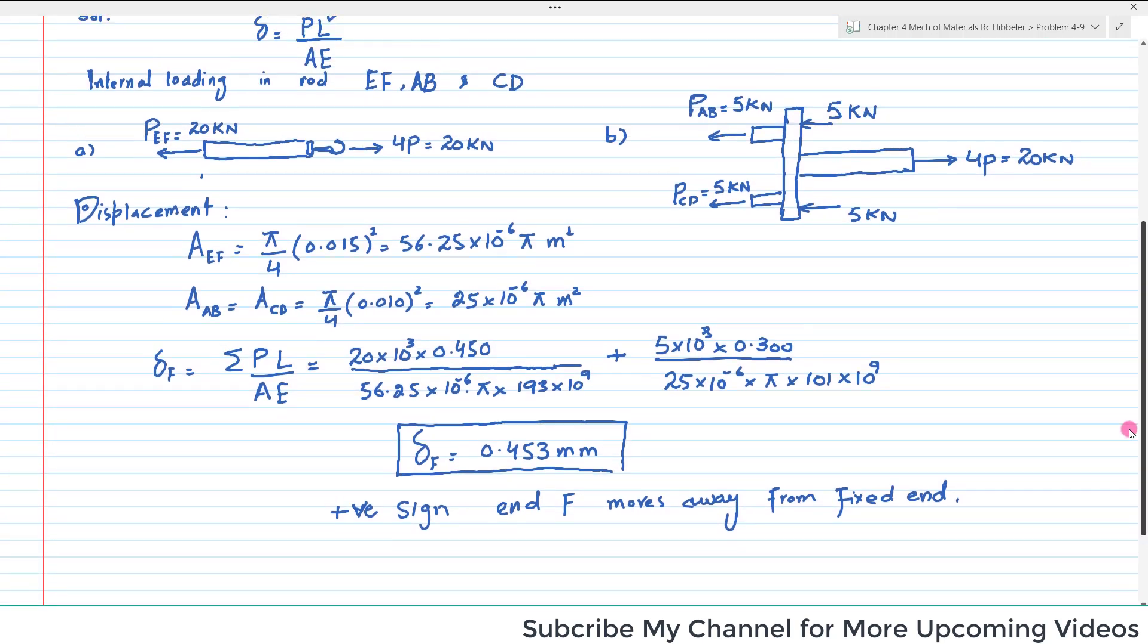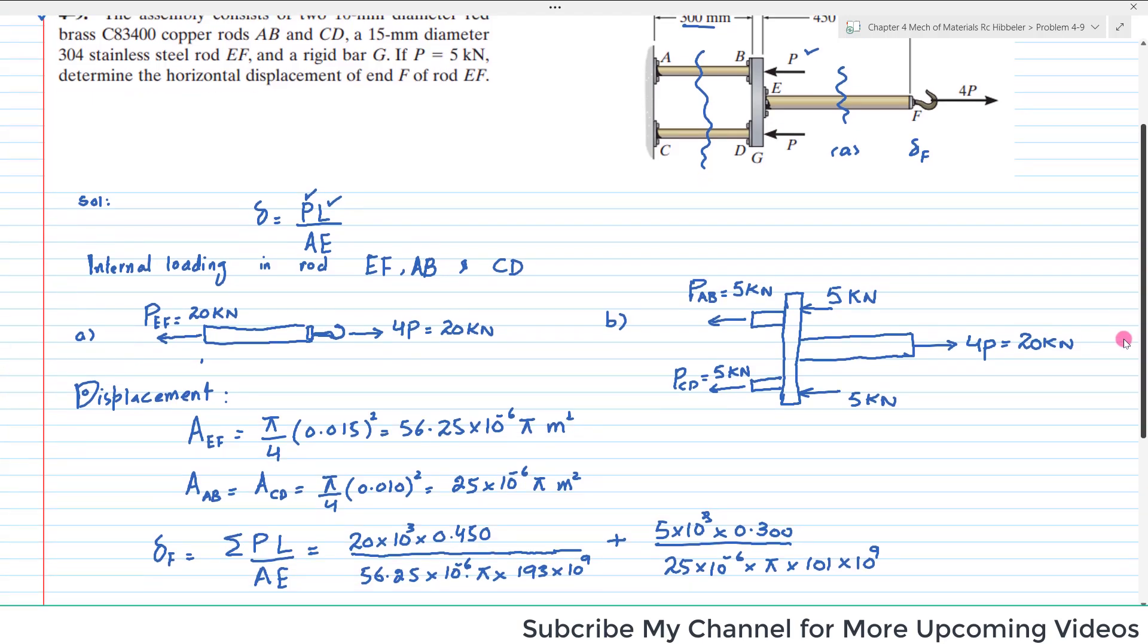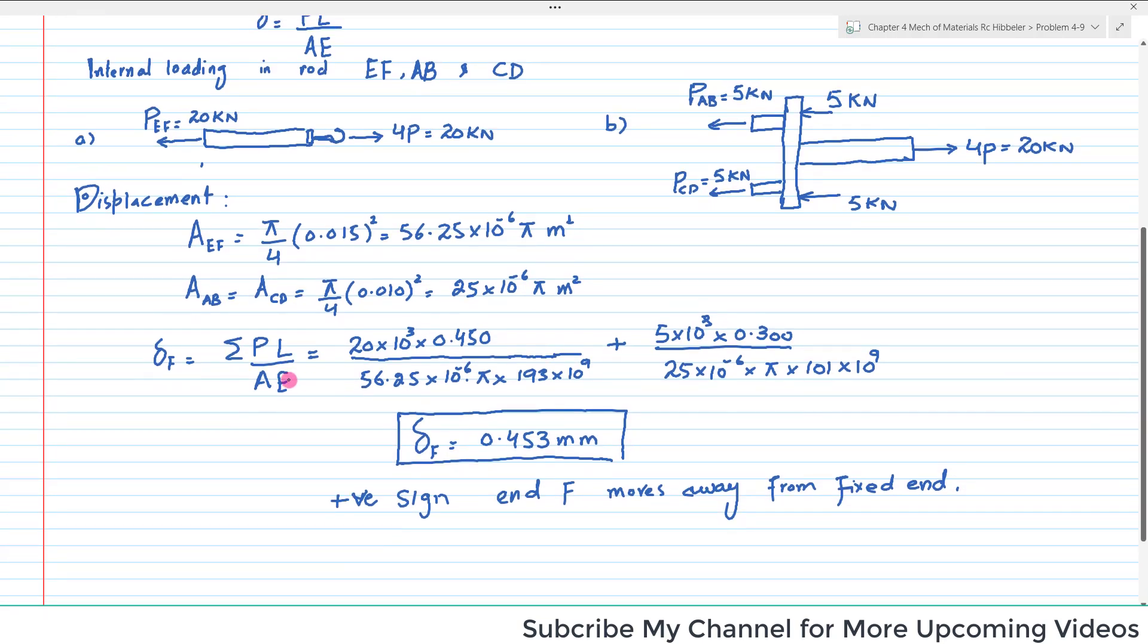This was the answer to question 4-9. I hope you have learned it and it's very easy. The next problem will be 4-10, which will be the same but delta F will be given and you have to find P. Keep watching and enjoy more problems. Thank you.